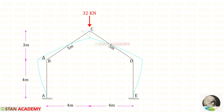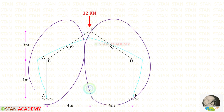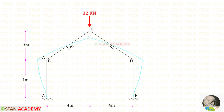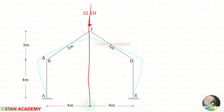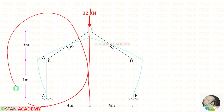Since the frame is symmetrical and loading is also symmetrical, the displacements on the left side and the right side will be the same. In addition to the sway, we will have slopes: theta_B at joint B and theta_D at joint D. At joint C, there will be no slope due to symmetrical loading and symmetrical dimensions, so theta_C = 0. We can split the frame from the center and analyze only the left side.